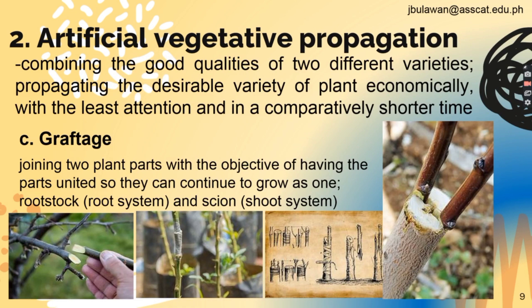Letter C: graftage. The process requires root systems or rootstocks from native seedlings of fruit trees, and a scion from a hybrid variety. You need to attach them using graftage techniques: the cleft, the saddle, and the splice, which is the simplest. Then wrap it with cellophane and make sure the cuts are only about 1 inch to secure and help the wound of the branches heal easily.